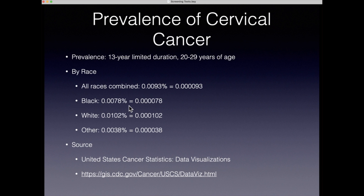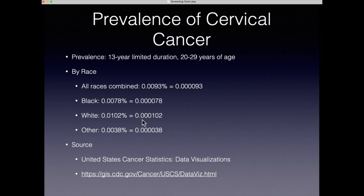Among Black or African-American women in this age group, the prevalence is 0.0078%, or as a proportion 0.000078. Among white females in that age range, the prevalence is 0.0102%, or as a proportion 0.0000102. For the other category, the prevalence is 0.0038%, expressed as a proportion 0.000038.